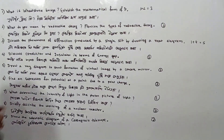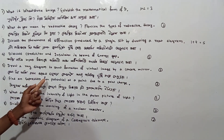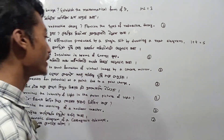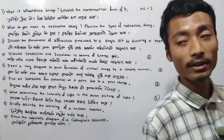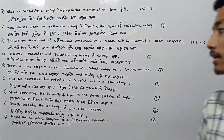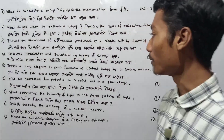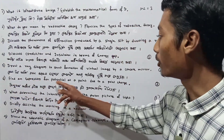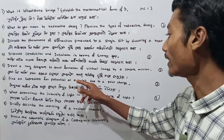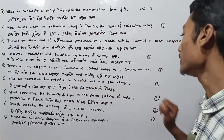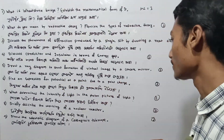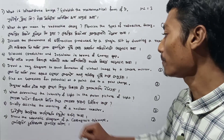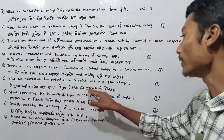Next question: Draw a ray diagram to show the formation of a virtual image by a concave mirror. This is a 2-mark question. Show the ray diagram for virtual image formation by a concave mirror. 2 marks — okay.